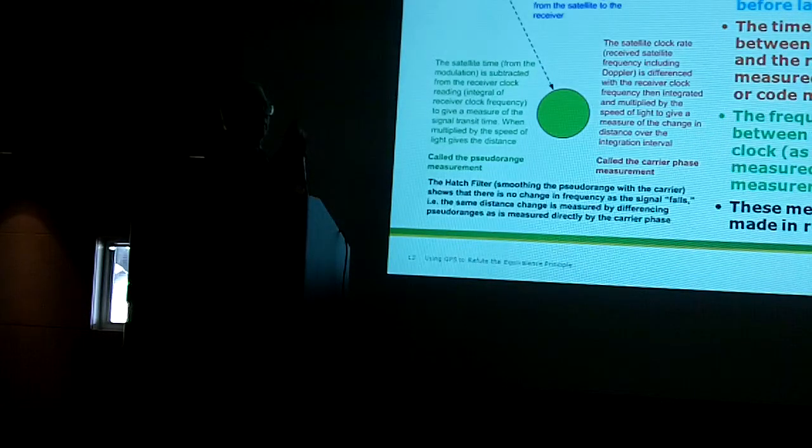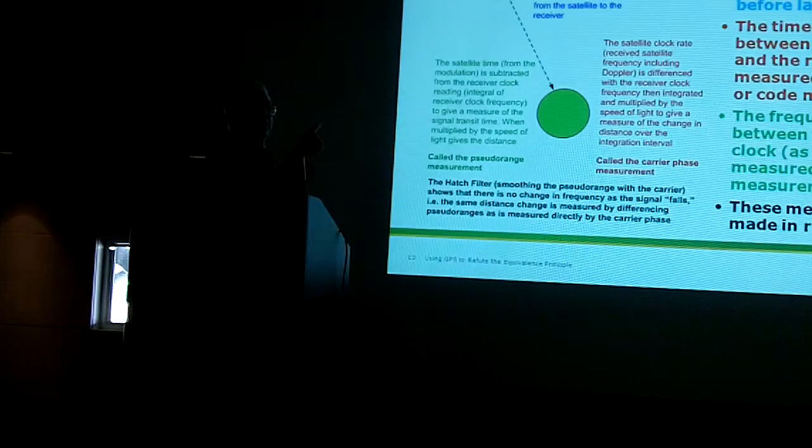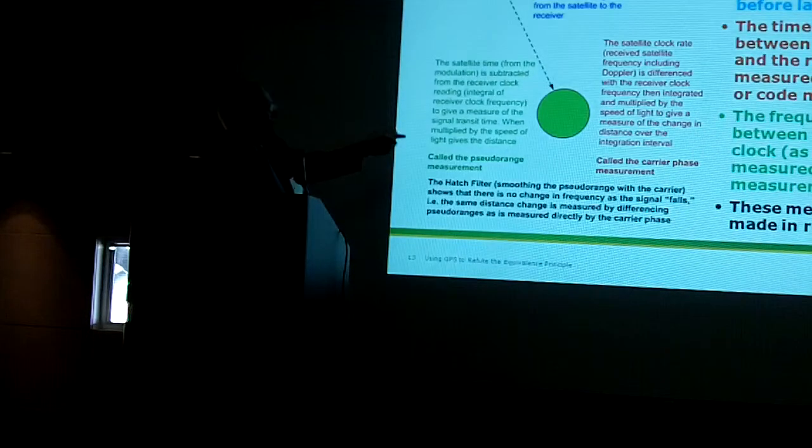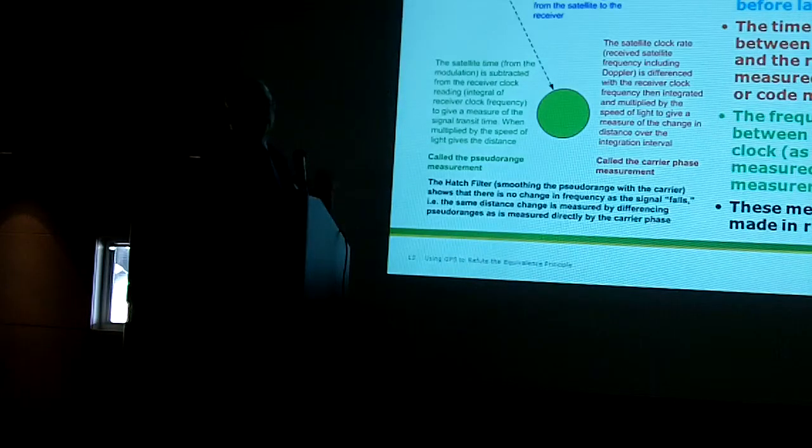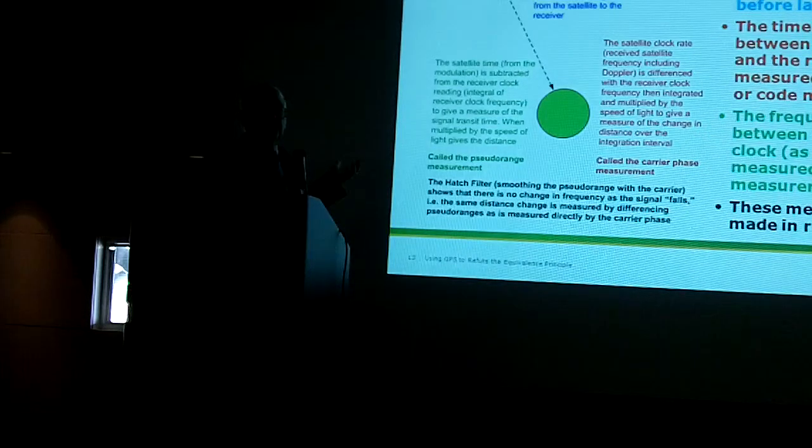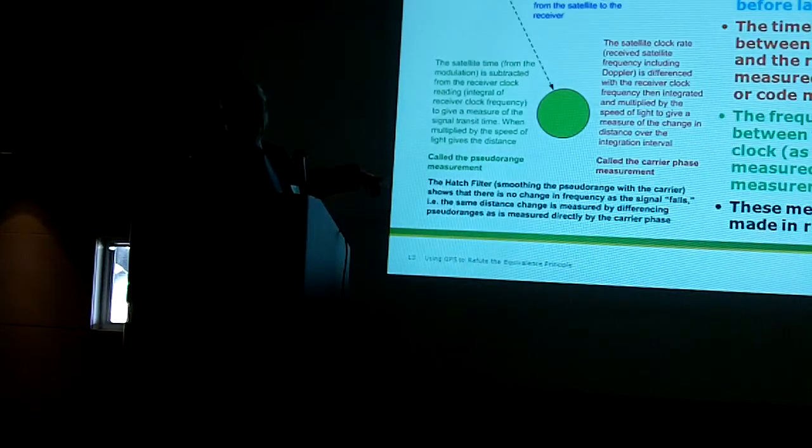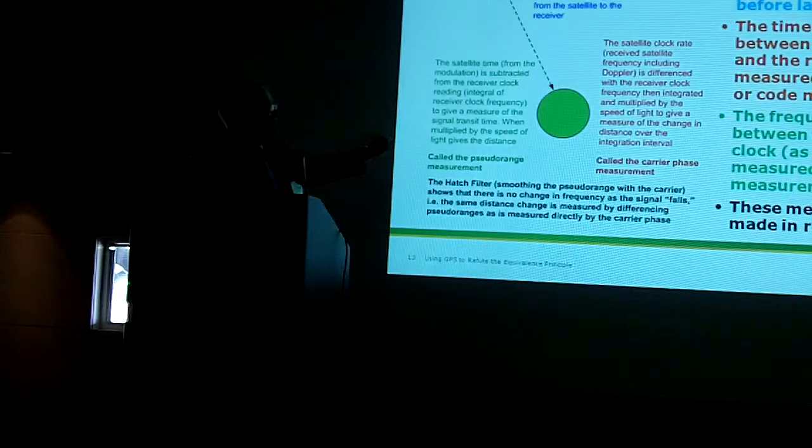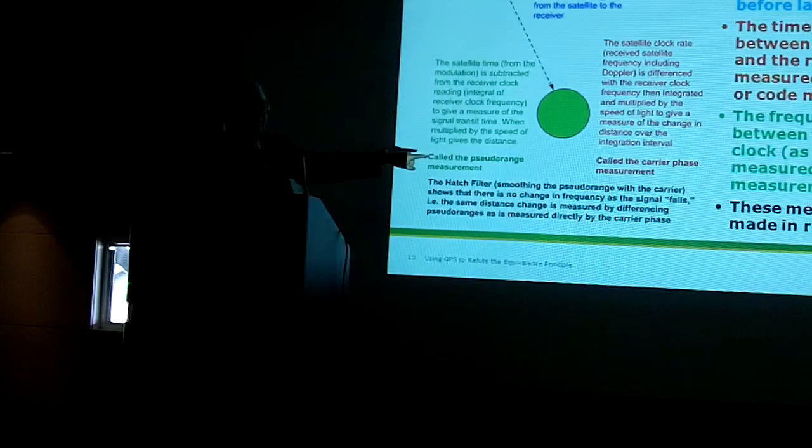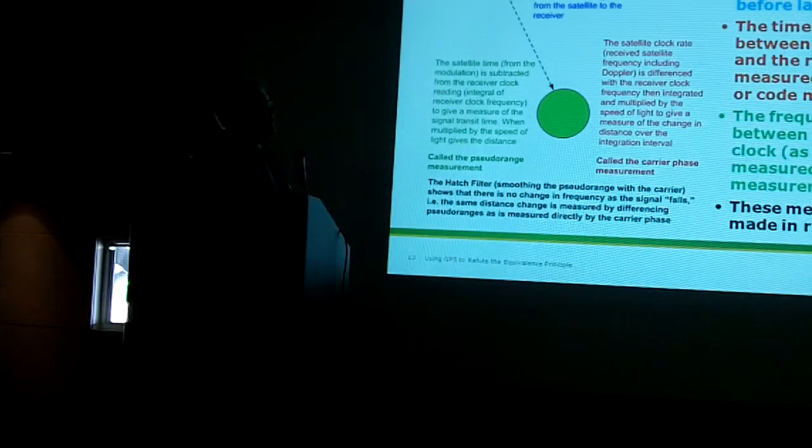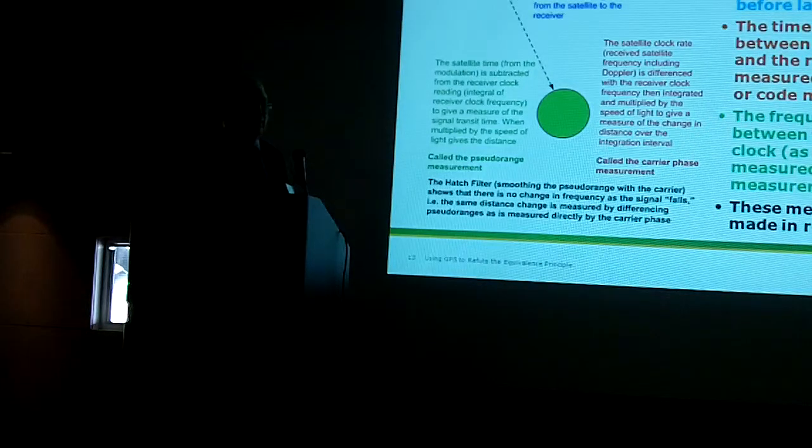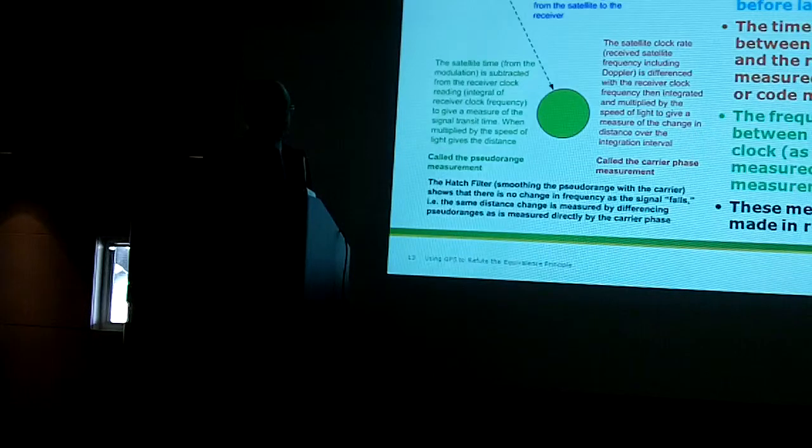Now, if the clock didn't increase in frequency, if the clock didn't run faster at the higher rate, the time measurement would diverge and you would get a lousy code measurement. Furthermore, it wouldn't agree with the carrier phase measurement and you couldn't smooth them. We typically, with a dual frequency set, can smooth it for 15 minutes to half an hour to get rid of almost all the code noise and be left with centimeter kinds of noise on the carrier phase. So these measurements are made in real time, and they get rid of that weak logic of Clifford Will to show that clocks run faster at higher elevation. They don't gain frequency as they fall, and radiation does not gain in frequency as it falls.